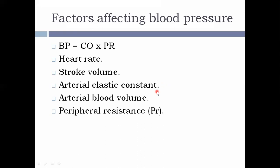The next factor is arterial blood volume. An increase in blood volume ultimately increases both systolic and diastolic blood pressure. The next is peripheral resistance. An increase in peripheral resistance increases blood pressure, and a decrease in peripheral resistance decreases blood pressure.